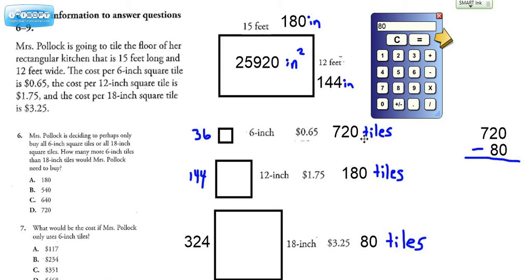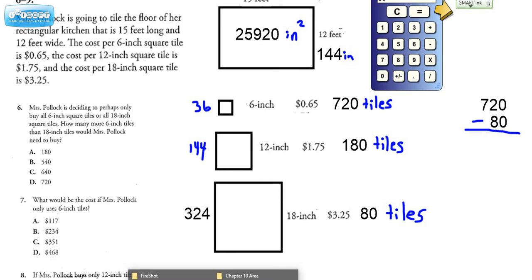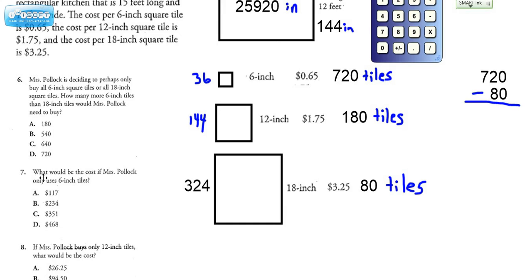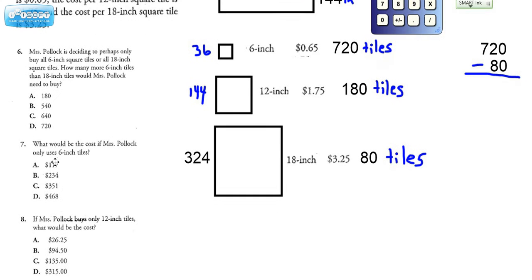and we figured out that we need 720 tiles to cover the floor if you get the six inch tile. You need 180 tiles to cover the floor if you buy the 12 inch, and you need 80 of the 18 inch tiles to cover the floor. And when we were finishing up video number one, we kind of got cut off on what to do for number seven, eight, and nine. So let's look at number seven again.